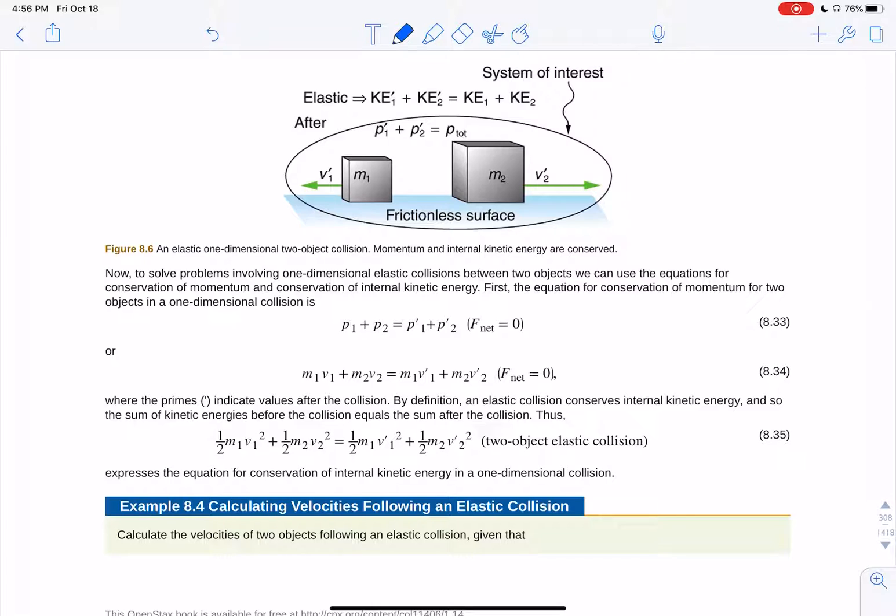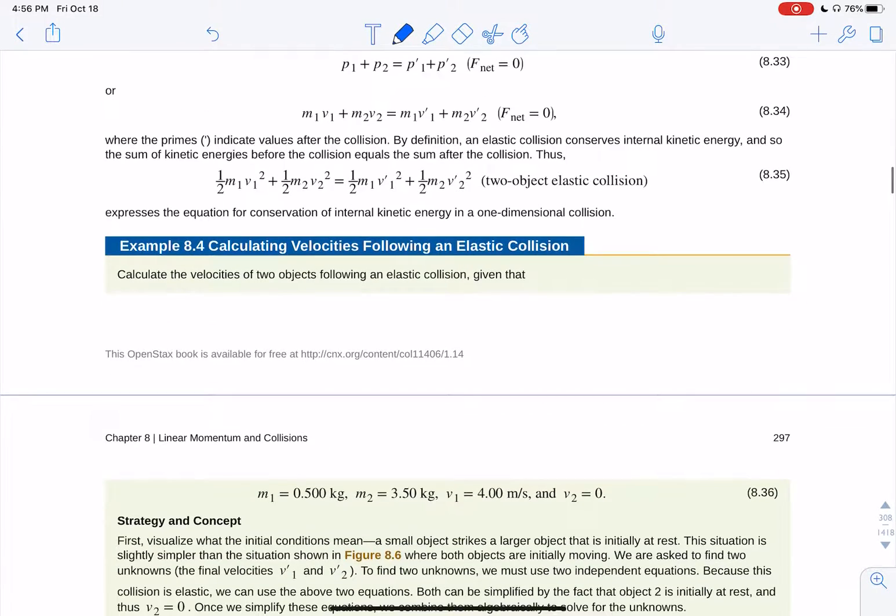Your initial momentum is equal to your final momentum, and your initial kinetic energy is equal to your final kinetic energy. So you've got two masses, M1, V1, M2, V2, before the collision, and M2, V2, after the collision. Then you also have their kinetic energies before and their kinetic energies after.